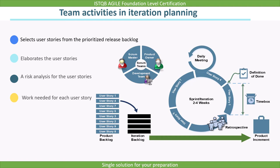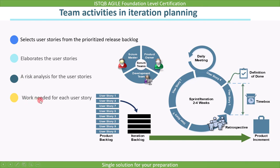These are the tasks the team does during iteration planning: selects user stories from the prioritized release backlog, elaborates the user stories, performs a risk analysis for the user stories, and estimates the work needed for each user story.